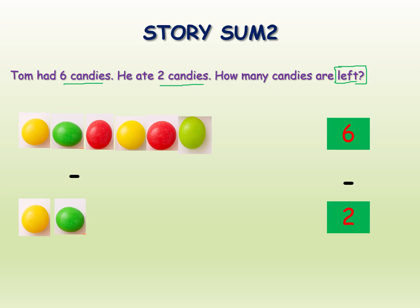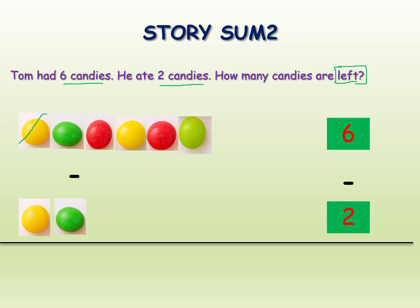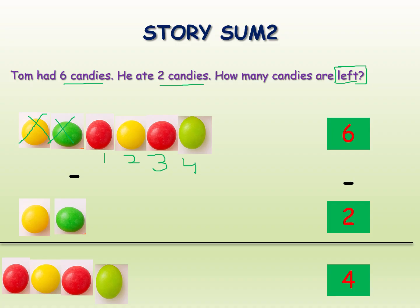What is the final answer? He ate two, so we cross out only two candies. Now how many are left? One, two, three, four — four. Six minus two is equal to four. Four candies are left.